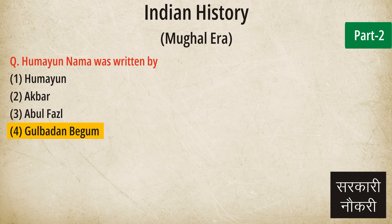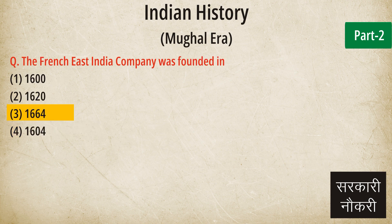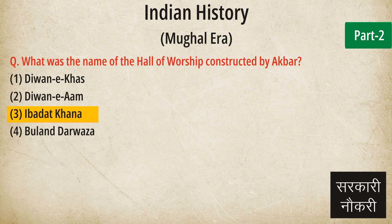Question: Humayunama was written by. Answer: Gulbadan Begam. Question: The French East India Company was founded in. Answer: 1664. Question: What was the name of the house of worship constructed by Akbar? Answer: Ibadat Khana.